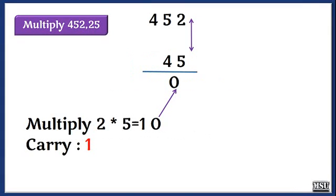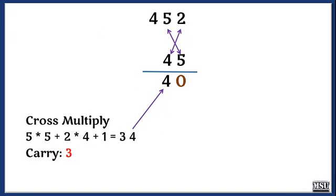First, we multiply the rightmost bits: 2 into 5 equals 10, so we write 0 and carry 1. Then we perform a cross multiplication — 5 into 5 and 4 into 2 — plus the carry, giving a result of 34. We write 4 and carry 3.